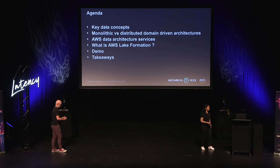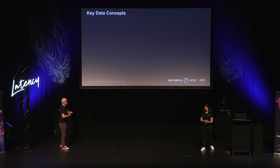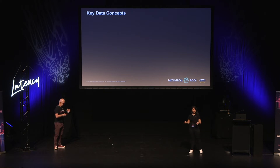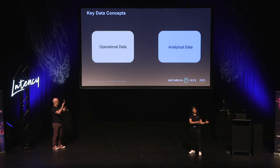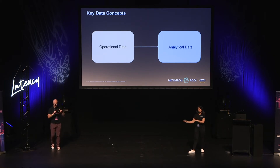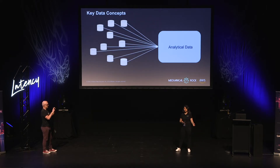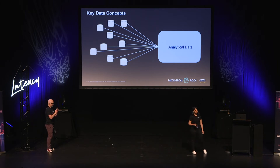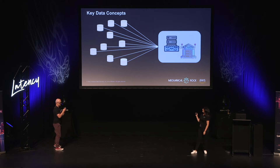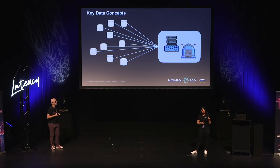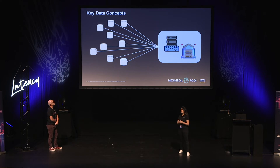Before I start, I thought of covering some key data concepts for people who might not be familiar in this space. Our data often comes in two categories: it's either operational data or analytical data, and it often moves from the operational side to the analytical side. Operational data — our system databases, databases we work with every day, system-generated data, logs. Analytical data, on the other hand, encompasses our data lakes and data warehouses. Quick intro: what is a data lake, what is a data warehouse, what are the differences?